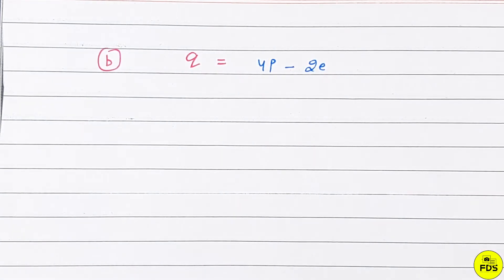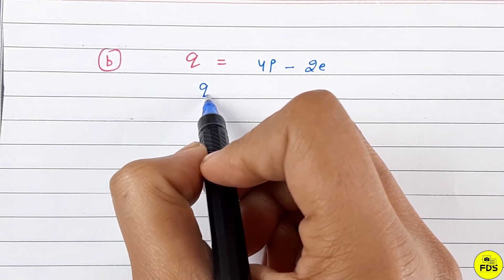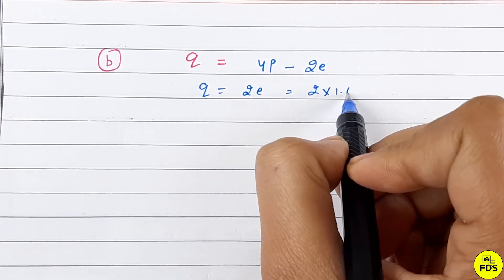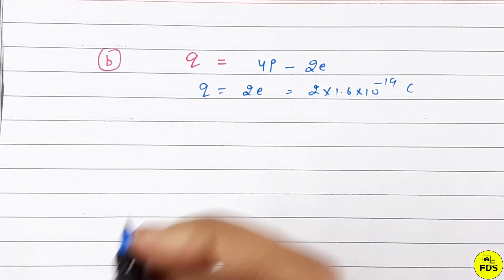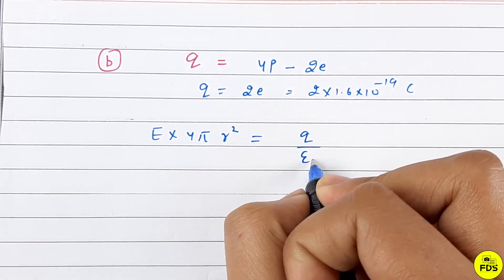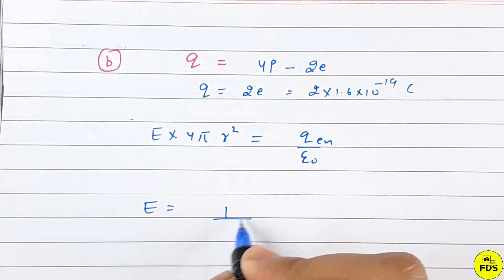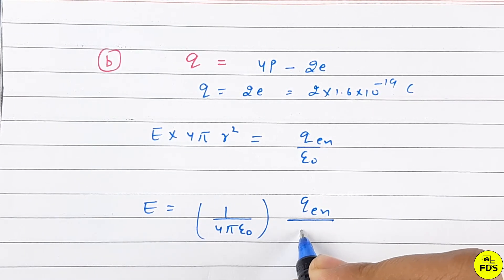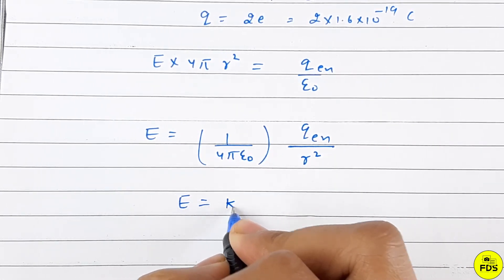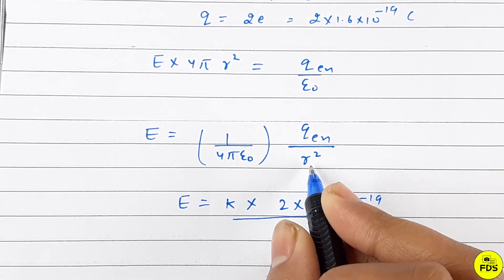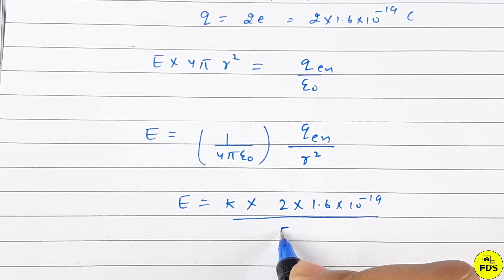So charge enclosed is 4p minus 2e, which equals 2e charge. Therefore E = (2e)/(4πε₀r²), or E = kq_enclosed/r² where k = 1/(4πε₀). Here k = 9 × 10^9, charge is 2 × 1.6 × 10^-19, and r is 5.2 × 10^-11.